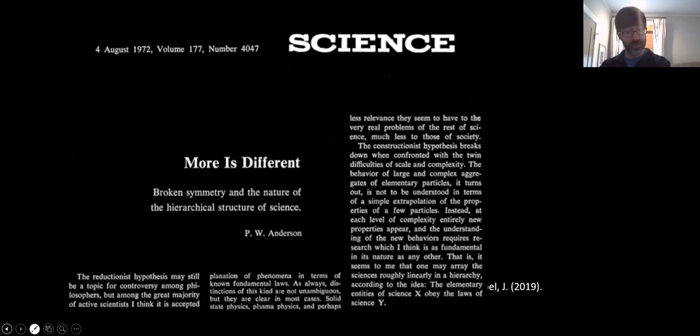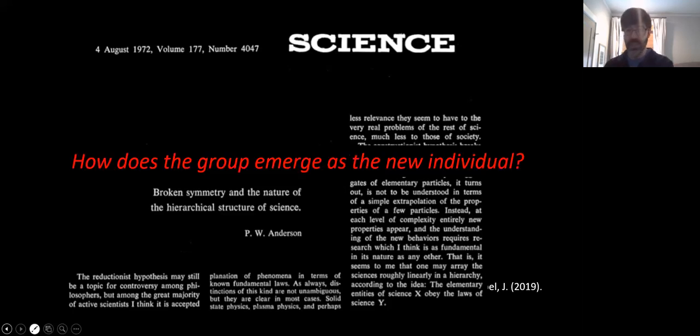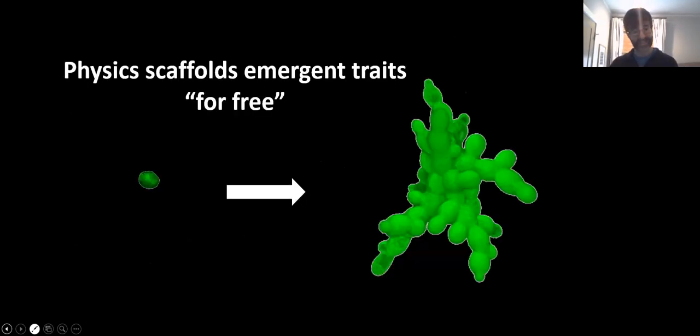And so with multicellular organisms or with nascent multicellular organisms, this is essentially the question. For multicellular groups, how does a multicellular group emerge as the new individual? How does evolution start to proceed at the group level rather than at the level of individual cells? And without going into research about this, I'll just briefly note that the hypothesis that has been guiding a lot of our thinking on this is that physics will scaffold the emergence of these group level traits essentially for free. There's underlying physics that's occurring, and that leads to a class of emergent group level traits without any additional biology having to occur.